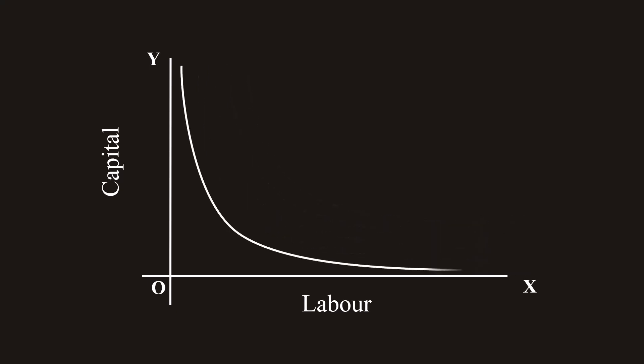But the ultimate aim of the producer is to produce a given output by choosing a cost-minimizing combination of factors. The producer cannot achieve his aim without any information about outlay and prices of two factors.